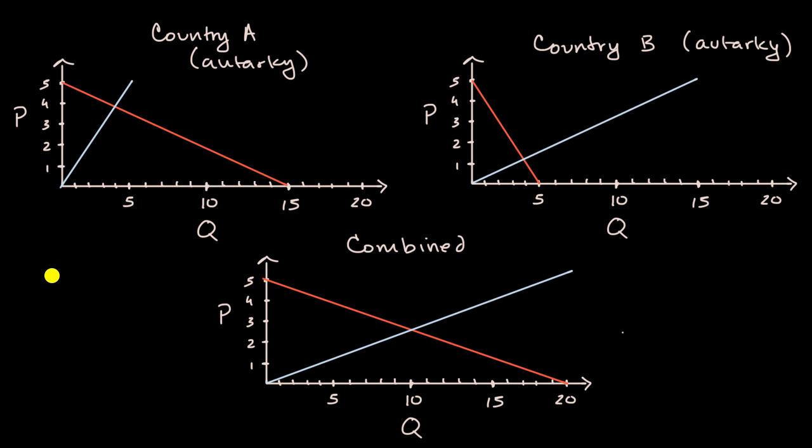In this video, we're going to think about how trade can alter the equilibrium price and quantity in a given market. What we see here are very simplified examples of markets in various economies. First we have Country A, and let's say it's the market for widgets. We're going to assume that Country A is not trading with anyone else, so it is an autarky, a fancy word which just means that this country is operating independently in isolation.